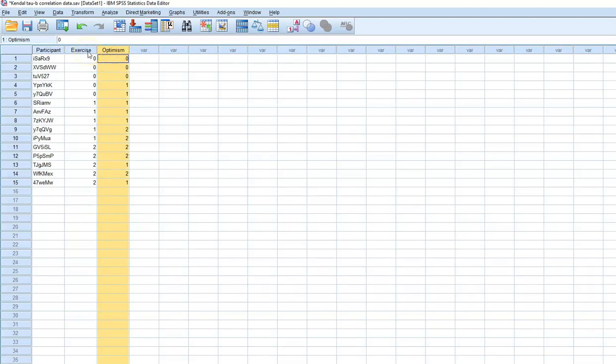Exercise has been measured at three levels: zero means they don't exercise, one means they exercise sometimes, and two means they exercise frequently. And optimism: zero means they are very pessimistic, one means moderately optimistic, and two means very optimistic.